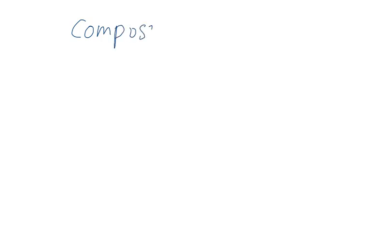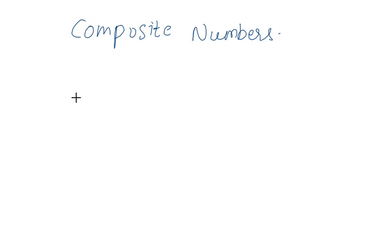Hello friends, welcome to one minute video. What are composite numbers? The numbers which have more than two factors are called composite numbers. Let us take one example: 6 can be written as 1 times 6 and 2 times 3.